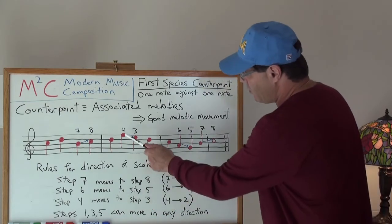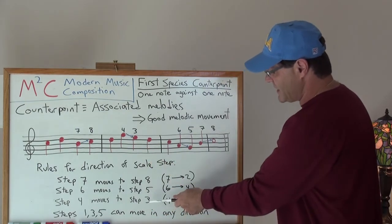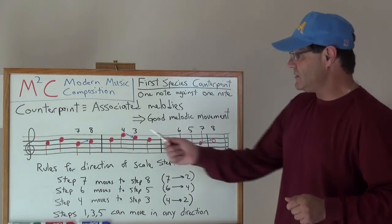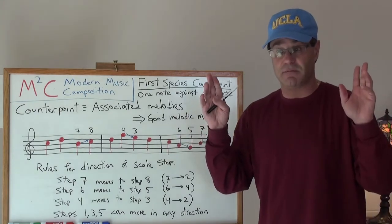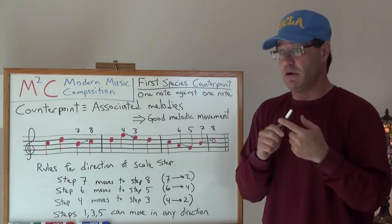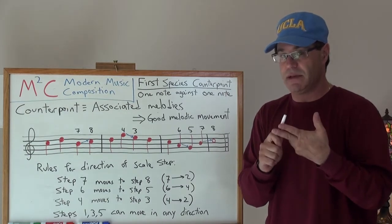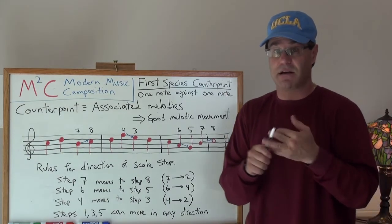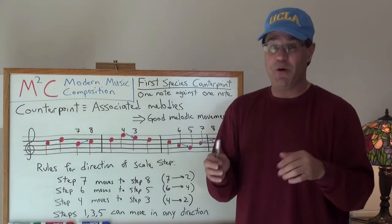And then step four, which is F, always moves down to three. Now, I showed these in terms of what is called a step. A step in distance is usually either a minor second or a major second. Anything above that is called a skip or a leap.